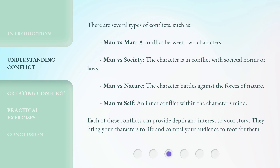There are several types of conflicts, such as Man vs. Man — a conflict between two characters; Man vs. Society — the character is in conflict with societal norms or laws; Man vs. Nature — the character battles against the forces of nature; and Man vs. Self — an inner conflict within the character's mind. Each of these conflicts can provide depth and interest to your story.